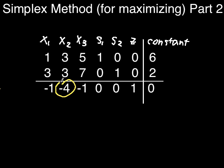Then look at the column that the indicator indicates. For each of the values in that column, divide that value's corresponding constant by the value. So here you divide 2 by 3 to get a quotient of 2 thirds, and here you divide 6 by 3 to get a quotient of 2.